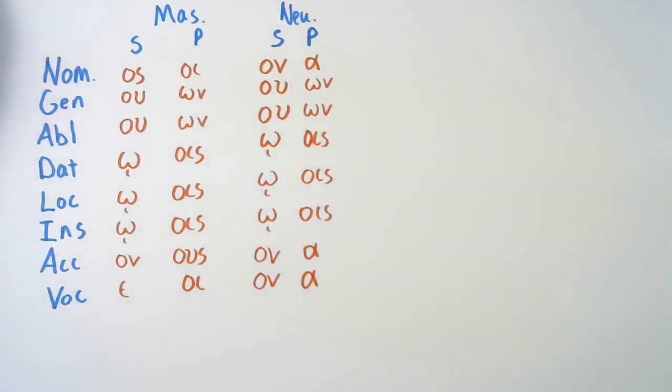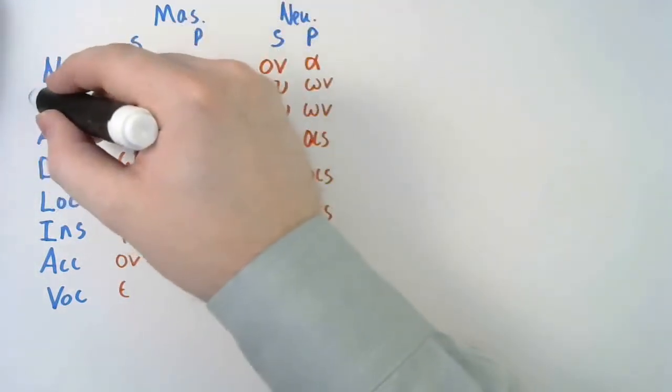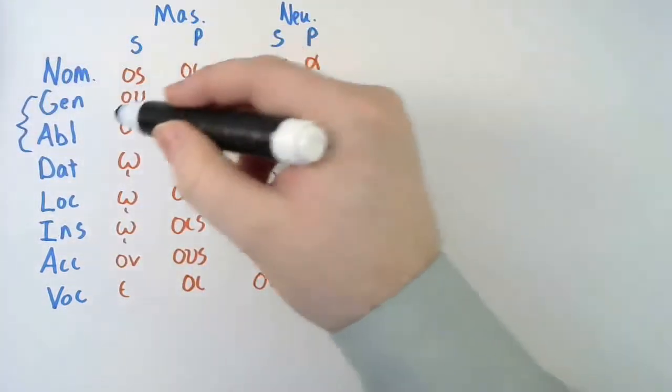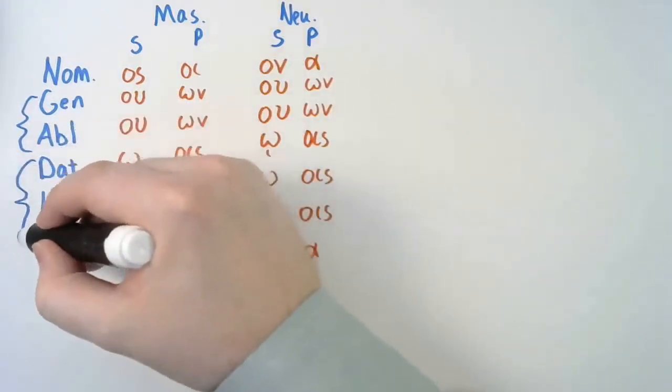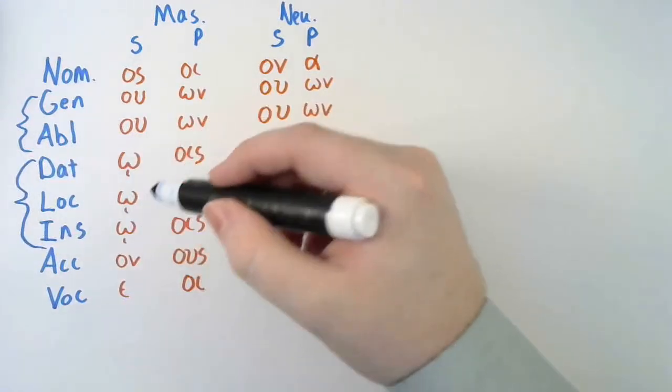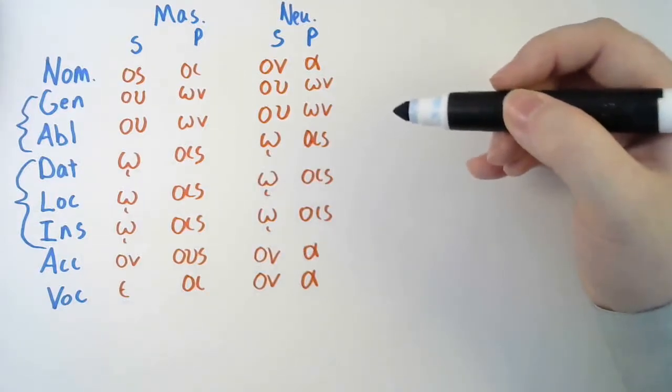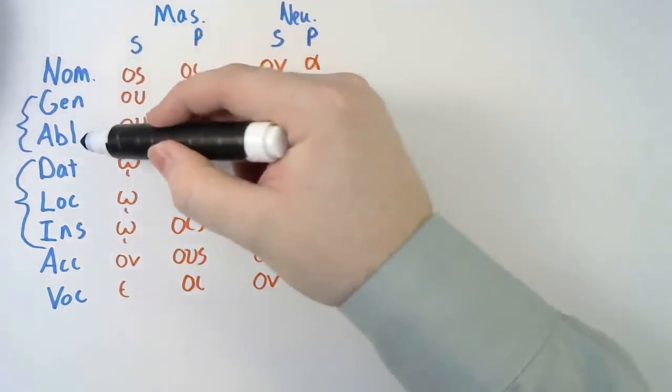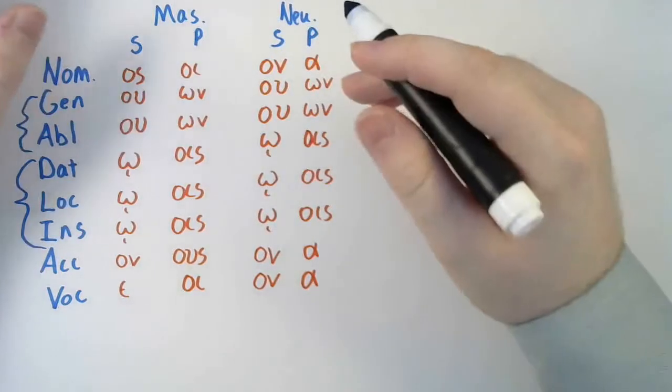Now there's some things you need to notice about this chart. You're going to say, well, the genitive and ablative, look an awful lot alike. Because it's ou, ou, on, on. They look all the same. The dative, locative, and instrumental, they look an awful lot alike. And say, hold on. What's going on here? Well, this is why we have the five-case system, because they group the genitive and ablative together. They call all these genitives based on their form. We're basing them on their function.